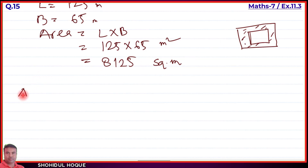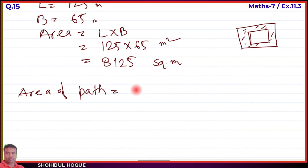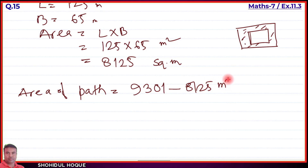Area of path = Area of outer rectangle (with road) minus area of inner rectangle (without road) = 9301 minus 8125 = 1176 meter square. This is the answer to question number 15.